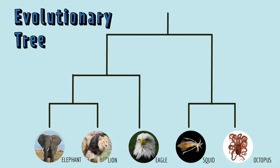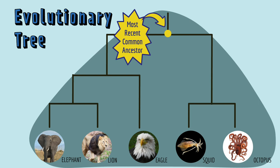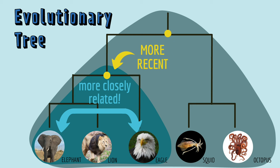Now, in an evolutionary tree, we don't know what the ancestors looked like, but we still know they existed. Each node in the tree represents an ancestor. So, the most recent common ancestor between eagles and elephants is here. It gave rise to elephants, lions, and eagles, but not to squid or octopus. There is a most recent common ancestor between eagles and squid, but it's older, farther away from the tips of the tree. Since the most recent common ancestor between eagles and elephants is more recent, eagles are more closely related to elephants than they are to squid.